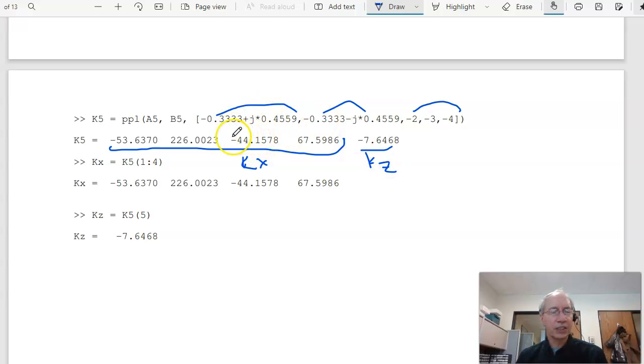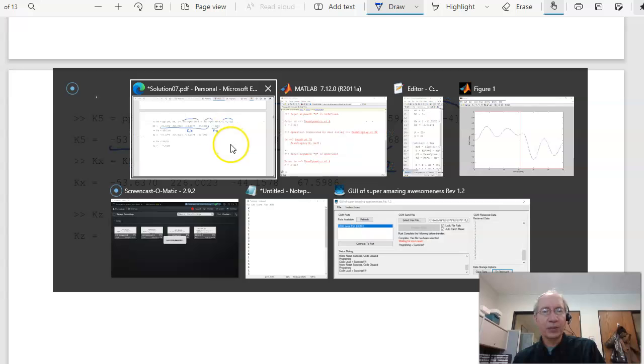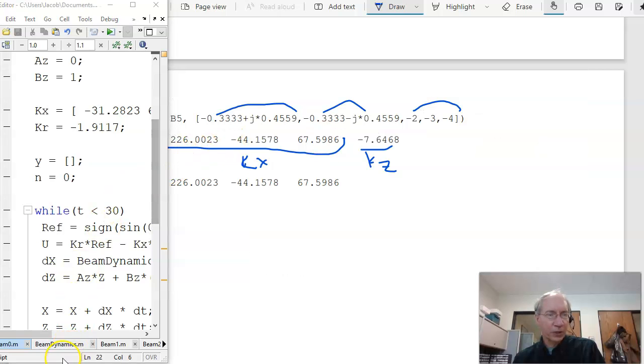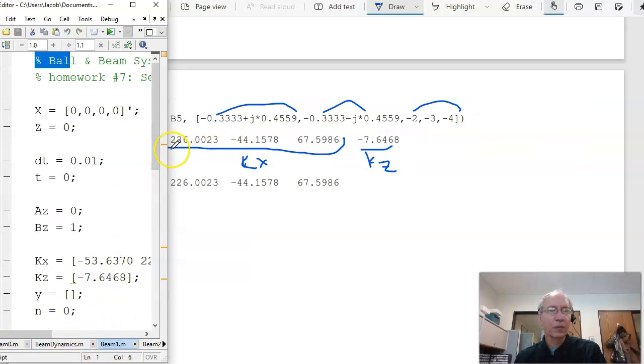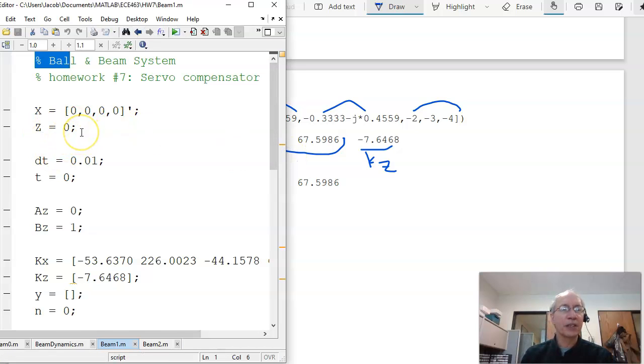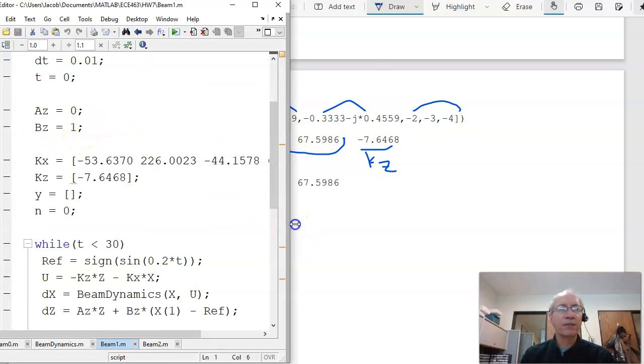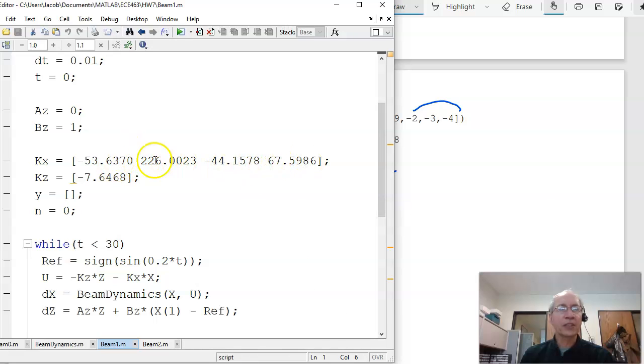Use pole placement to place the poles. I want to put the pole for 12 seconds settling time, 10% overshoot. It's conjugate. And three other poles kind of go somewhere. I don't really care where they go, as long as they're not dominant. And you get your 5 feedback gains. The way I set it up, the first four are kx.